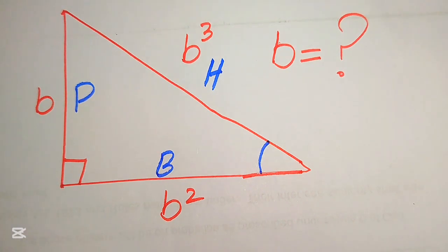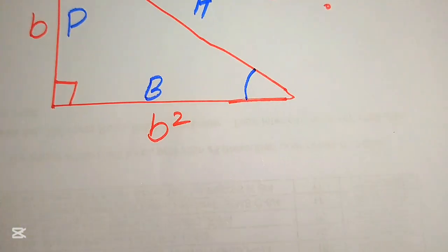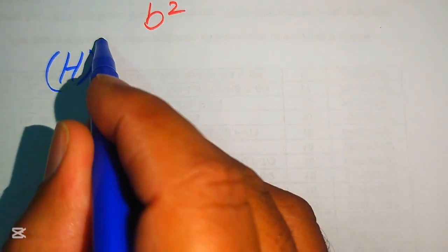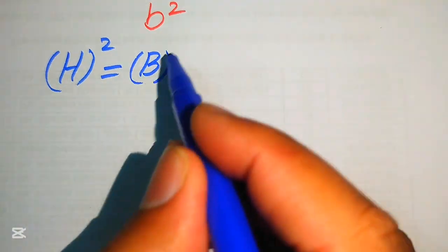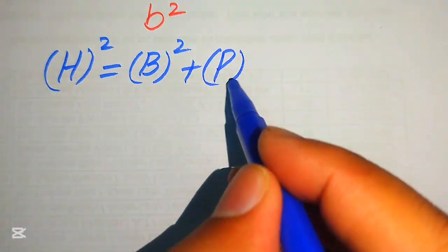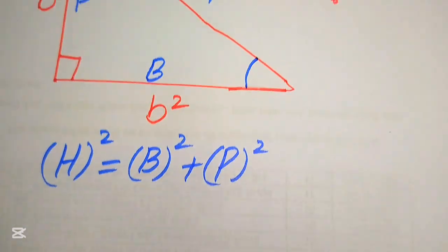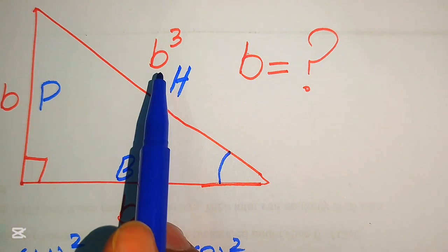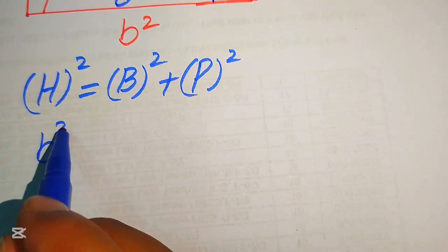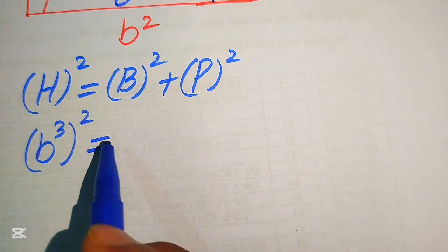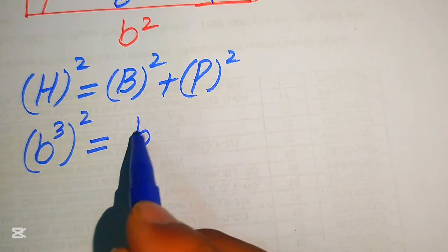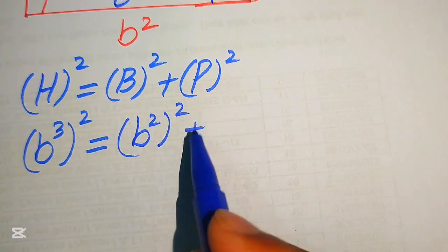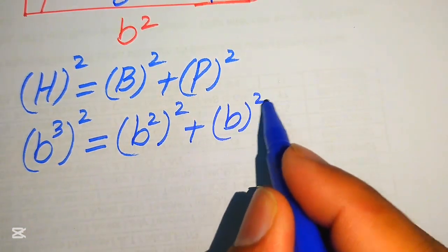In order to find the values of b, we need to apply the Pythagorean theorem: hypotenuse squared equals base squared plus perpendicular squared. We substitute the values — the hypotenuse h is b cubed, so (b³)² equals (b²)² plus b².